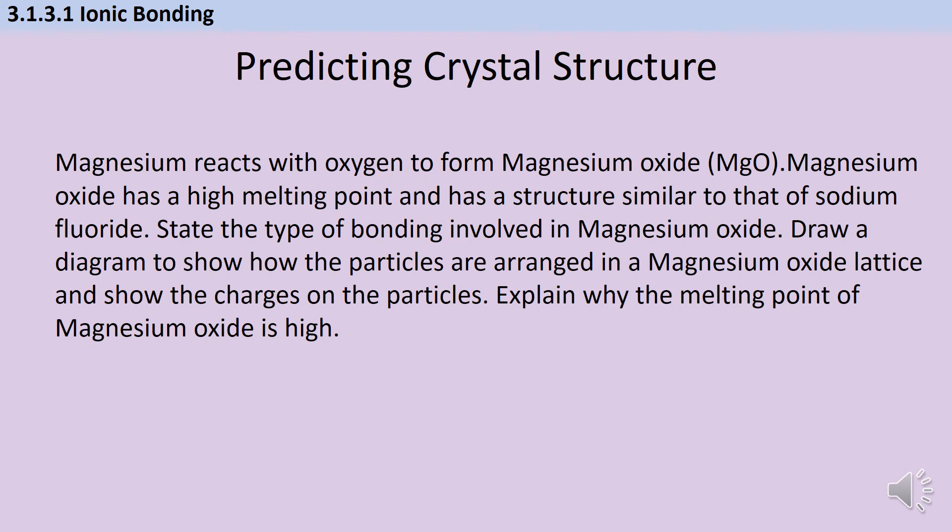Here's a similar but wordier question. Magnesium reacts with oxygen to form magnesium oxide. Magnesium oxide has a high melting point and a structure similar to sodium chloride. State the type of bonding in magnesium oxide. Draw a diagram showing how the particles are arranged and show the charges on the particles. Explain why the melting point is high.